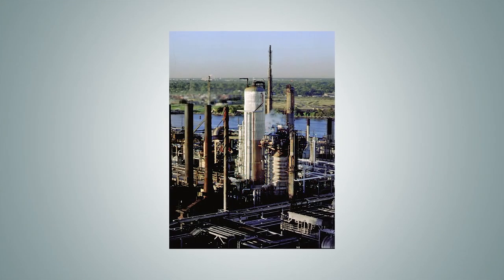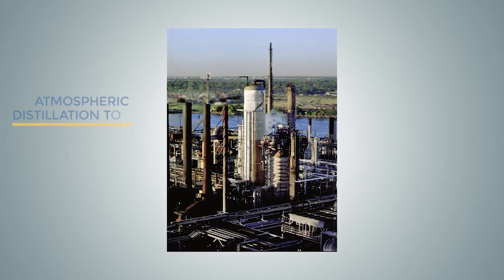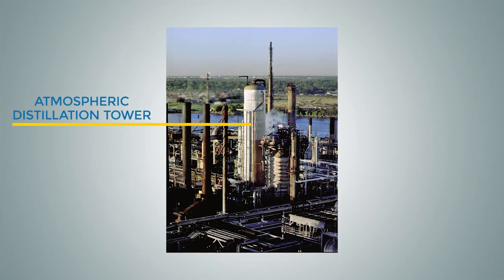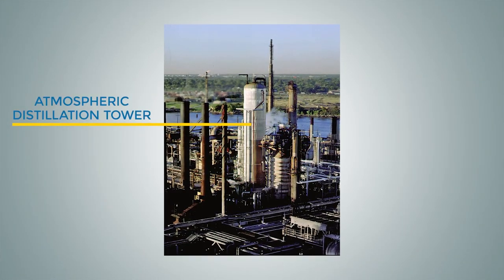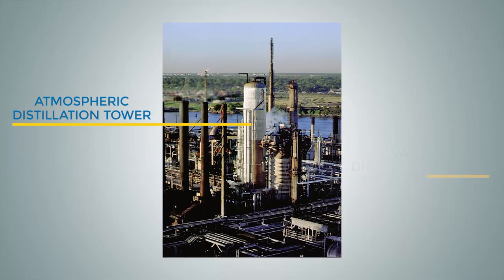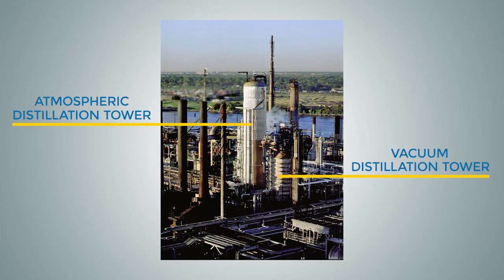This is a photo of a refinery crude unit. The tall vessel in the middle is the atmospheric distillation tower. The shorter vessel to the right, the one with the bands around it, is the vacuum distillation tower. As you can also see in the photo, there are many pipes running from the top and sides of the crude and vacuum towers. Some of these are the side drawers referenced earlier, which are used to remove each of the individual fractions.